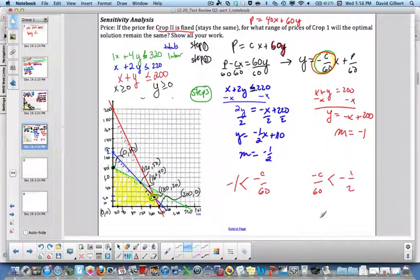So we solve these inequalities. I multiply both sides by negative 60—negative times negative is positive. Because I multiply by a negative, I have to switch the inequality, which gives me c has to be less than 60.